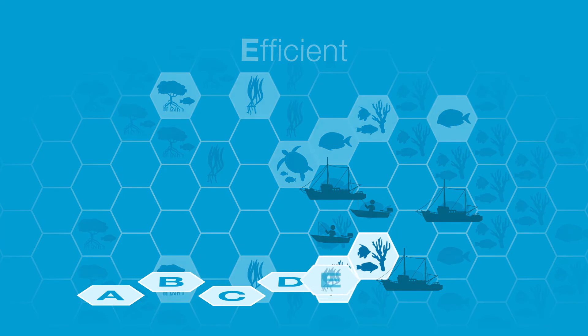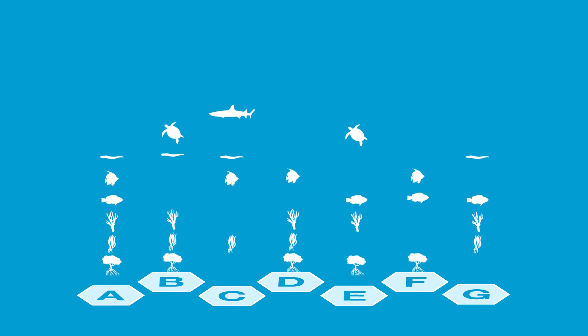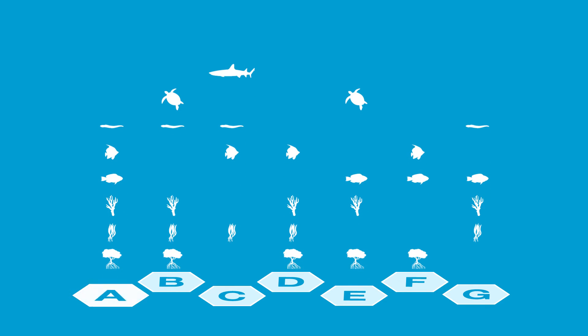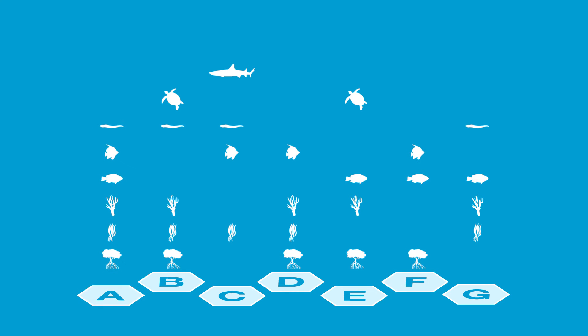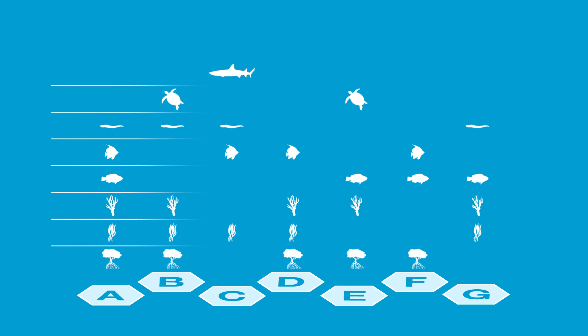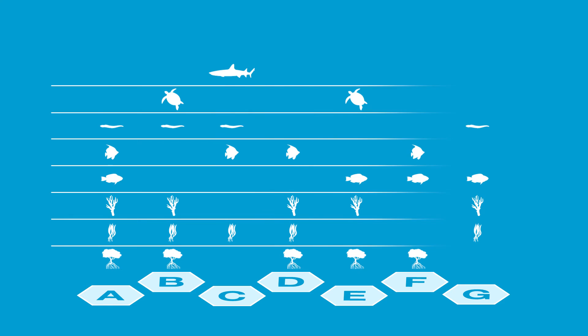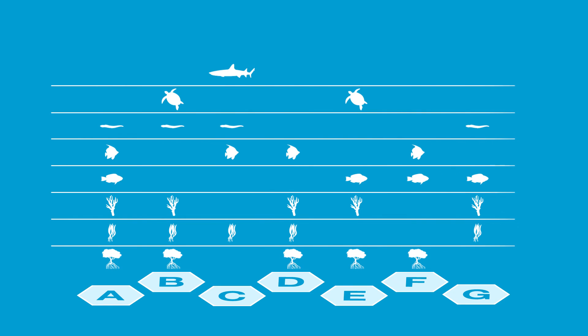Here is a hypothetical reserve design problem with sites containing conservation features. Some sites are rich, with lots of features, while others have less. Some features occur across many sites, like mangroves, while others occur in fewer sites. Your task is to find the smallest number of sites that conserve all the features — try to be efficient and choose the smallest number of sites.